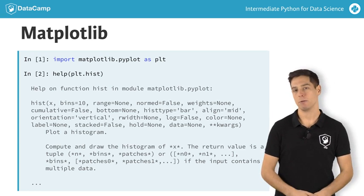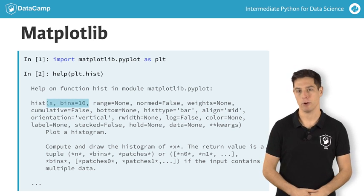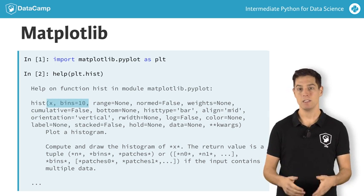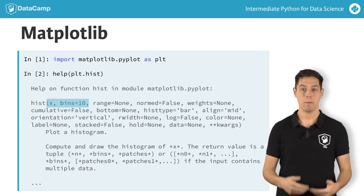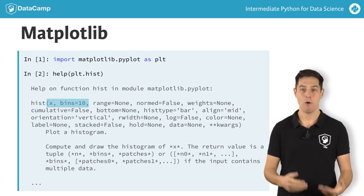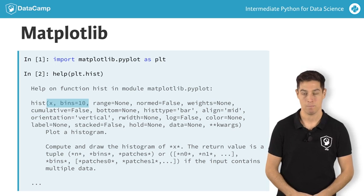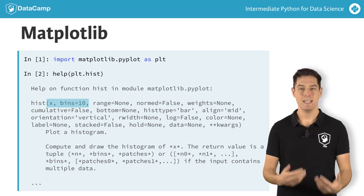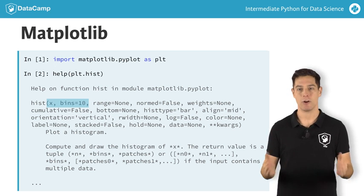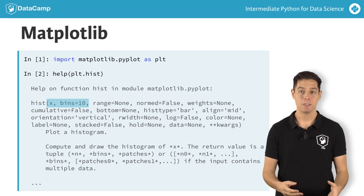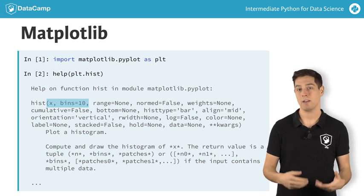There's a bunch of arguments you can specify, but the first two here are the most important ones. X should be a list of values you want to build a histogram for. You can use the second argument, bins, to tell Python in how many bins the data should be divided. Based on this number, hist will automatically find appropriate boundaries for all bins, and calculate how many values are in each one. If you don't specify the bins argument, it will be 10 by default.